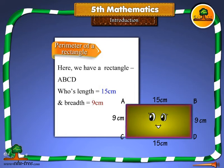Perimeter of rectangle. Here we have a rectangle ABCD whose length is equal to 15 cm and breadth is equal to 9 cm.